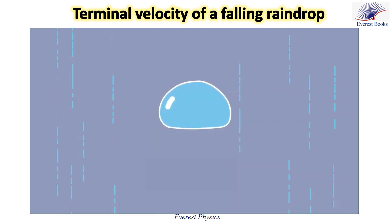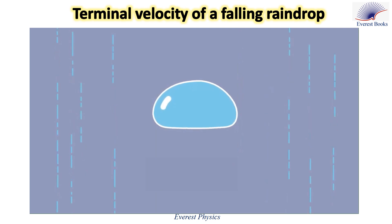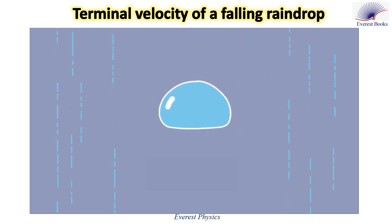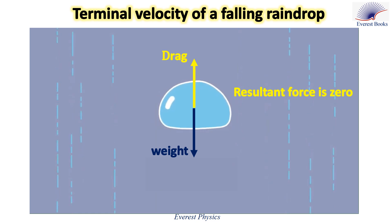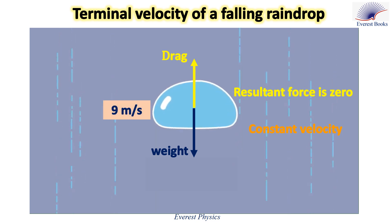Now consider the motion of a falling raindrop. Similar to the skydiver, when the drag force balances the weight of the raindrop, the drop falls with its terminal velocity. For a typical raindrop falling through air at standard conditions, its terminal velocity is approximately 9 meters per second.